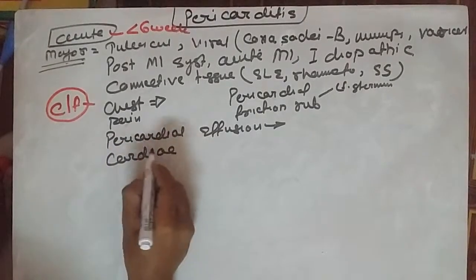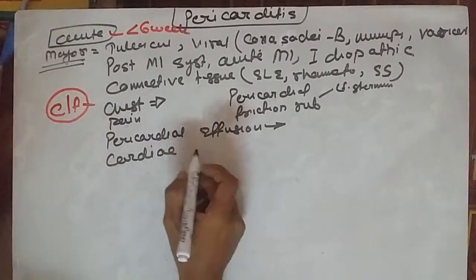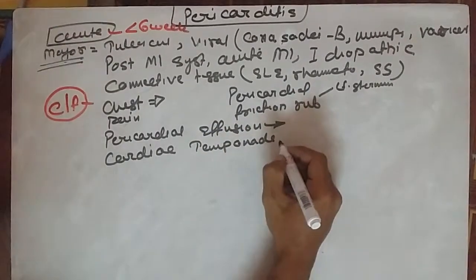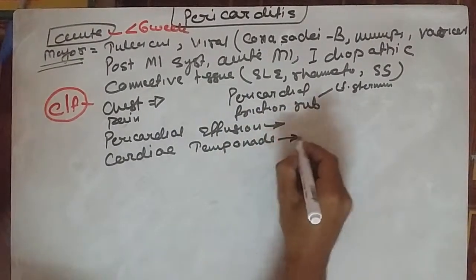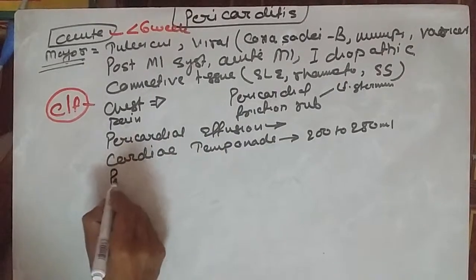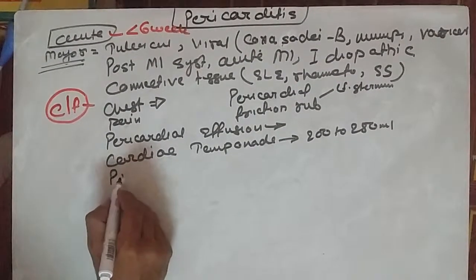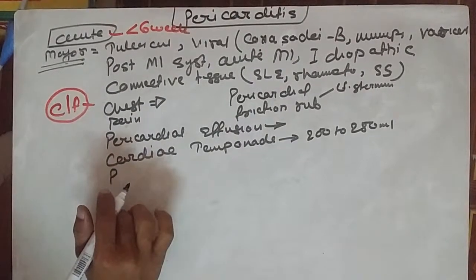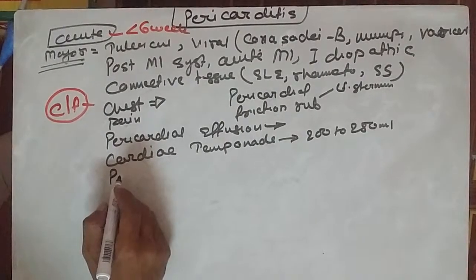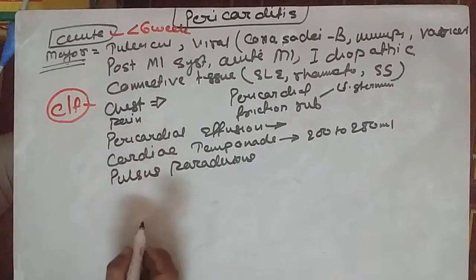Cardiac tamponade occurs when there's excessive fluid causing problems with contraction and dilation of the heart. Usually the fluid range to cause cardiac tamponade is 200 to 250 ml. Another symptom is pulsus paradoxus, which is reduced pulse pressure during inspiration and increased pulse pressure during expiration, so there's very less pulse pressure palpable.